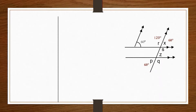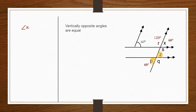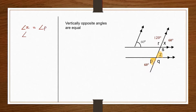Now we need to find angle Z. Looking at angle Z, directly opposite it we can see angle P. So these are two vertically opposite angles, and vertically opposite angles are equal. Therefore angle Z is equal to angle P, which is 60 degrees.